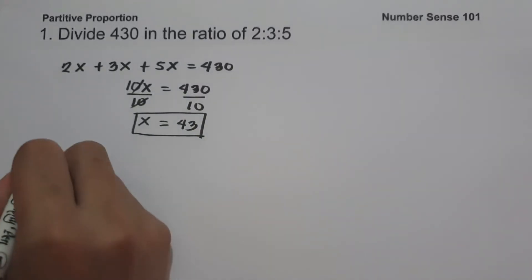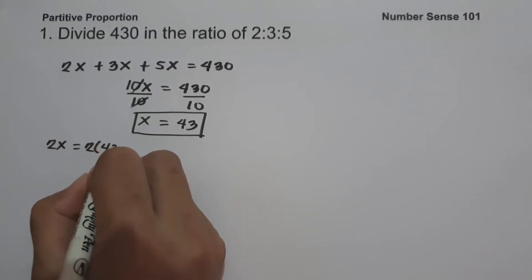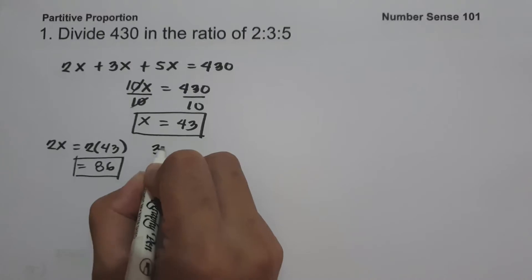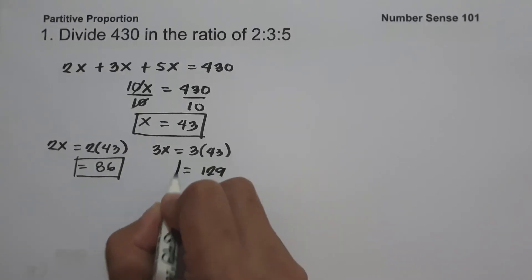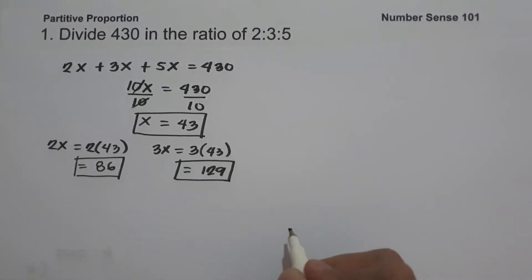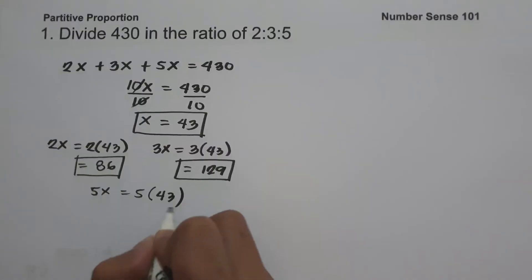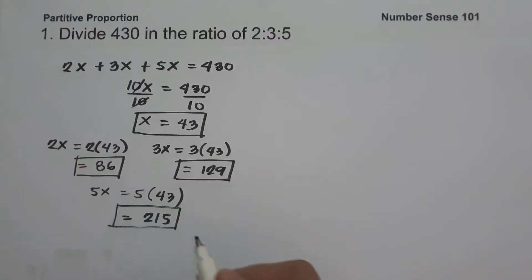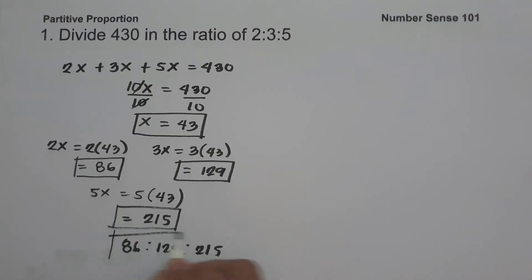To find the value of each ratio: 2x equals 2 times 43, which is 86. Then 3x equals 3 times 43, which is 129. And lastly, 5x equals 5 times 43, which gives us 215. So if we write our answer in the ratio of 2 is to 3 is to 5, we get 86 is to 129 is to 215. This will be our answer.